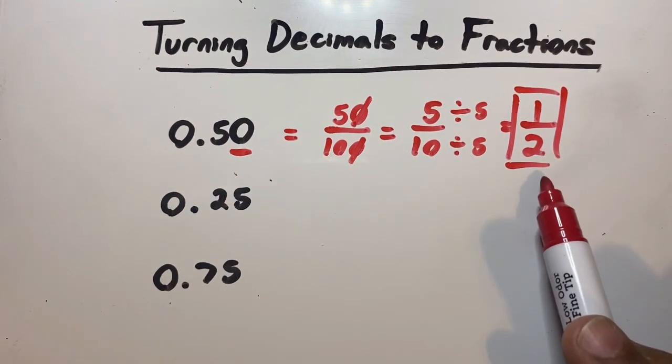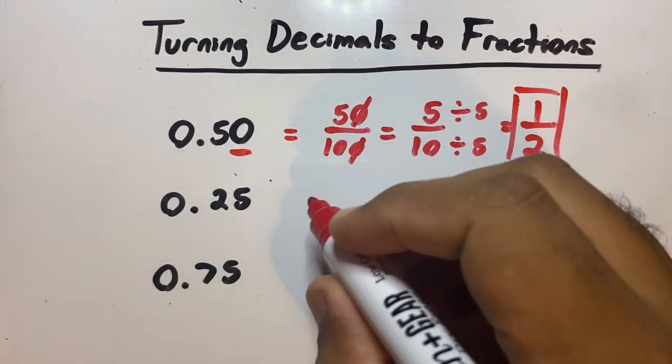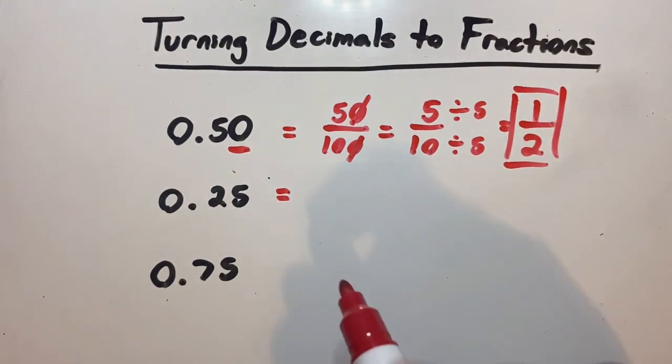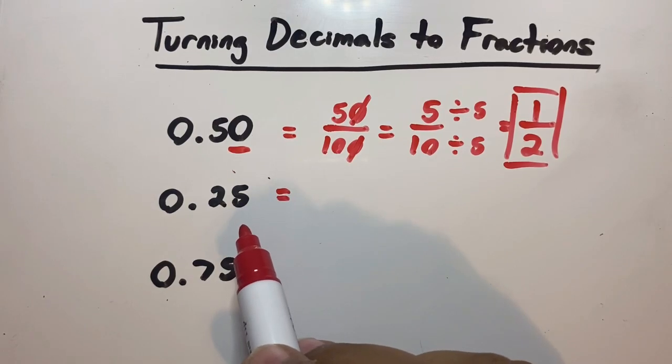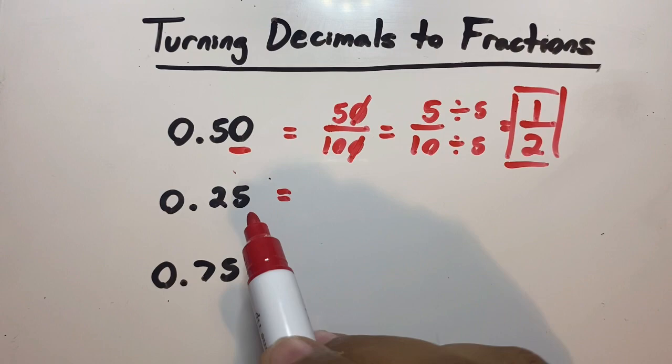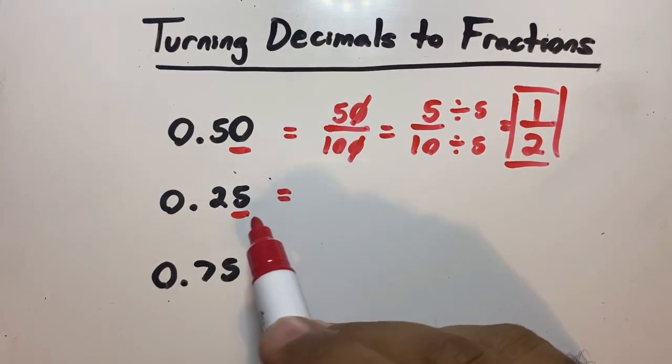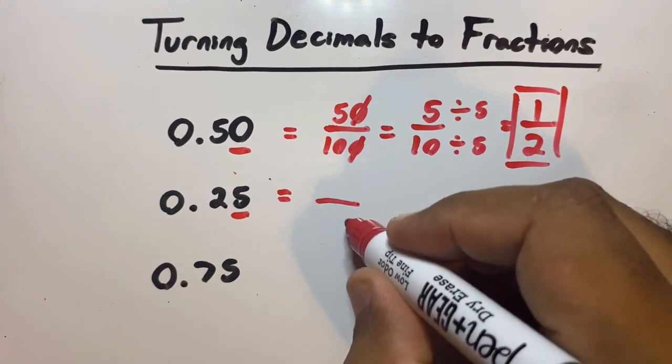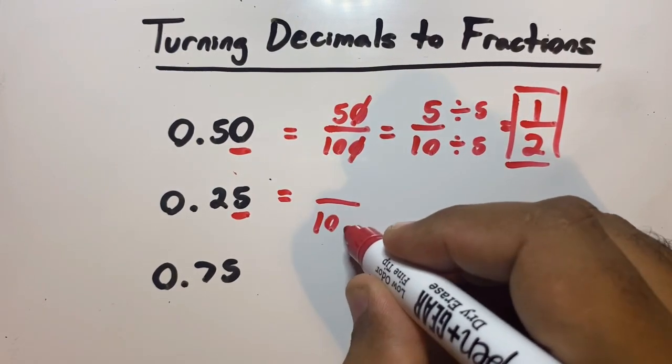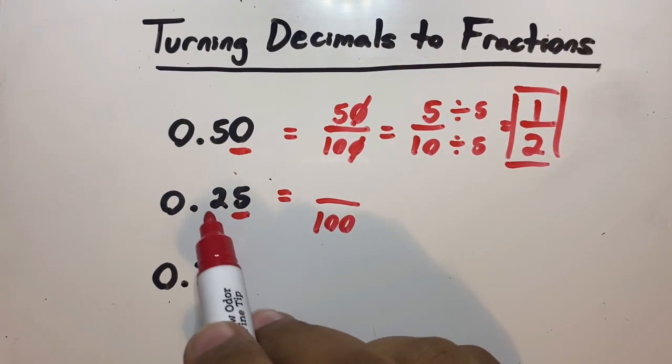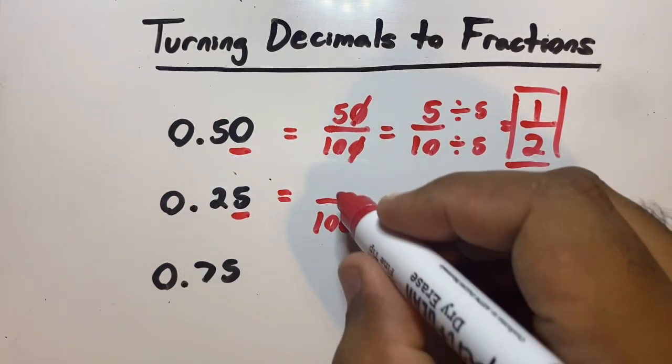Now let's move on. Again, we always have to remember what place value the last digit of this decimal is in. This 5 is in the hundredth place, so that means the bottom number, just like the one before, it's going to be 100. The top number is whatever the digits are here: 25. Very good.